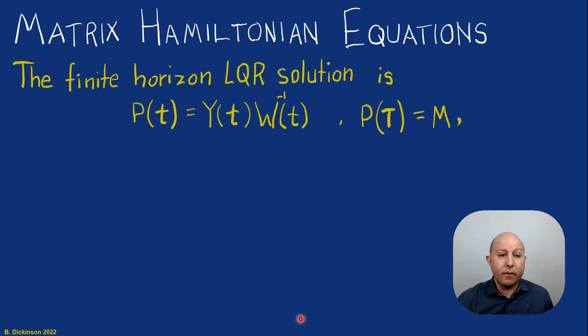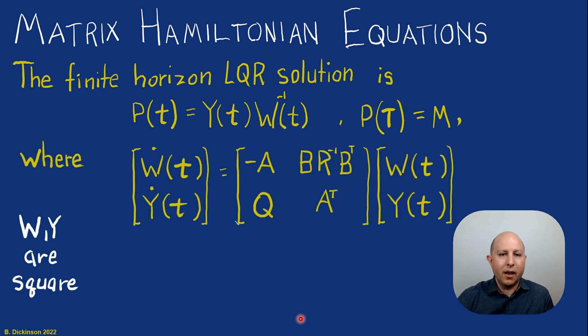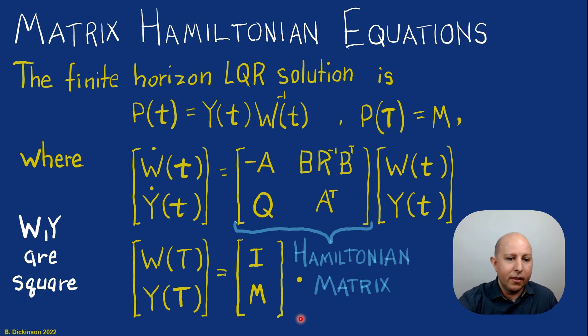Basically, the finite horizon LQR solution is P of t, and that's determined as the product of two square matrices, Y and W. And those two matrices come from the solution of a set of first-order ordinary differential equations with a final-time boundary condition. And this A matrix, the big A matrix, is called the Hamiltonian matrix, often denoted capital H. We won't go into the theory of how this is developed. Just know that this is the tool that was used to actually solve this Riccati equation. And now we're going to do that.